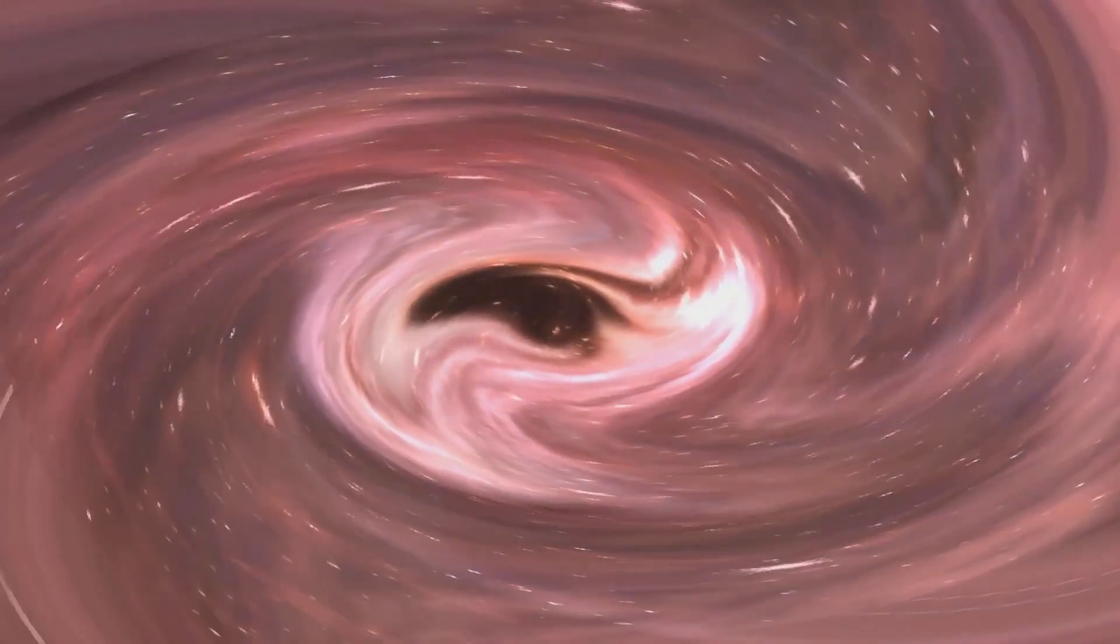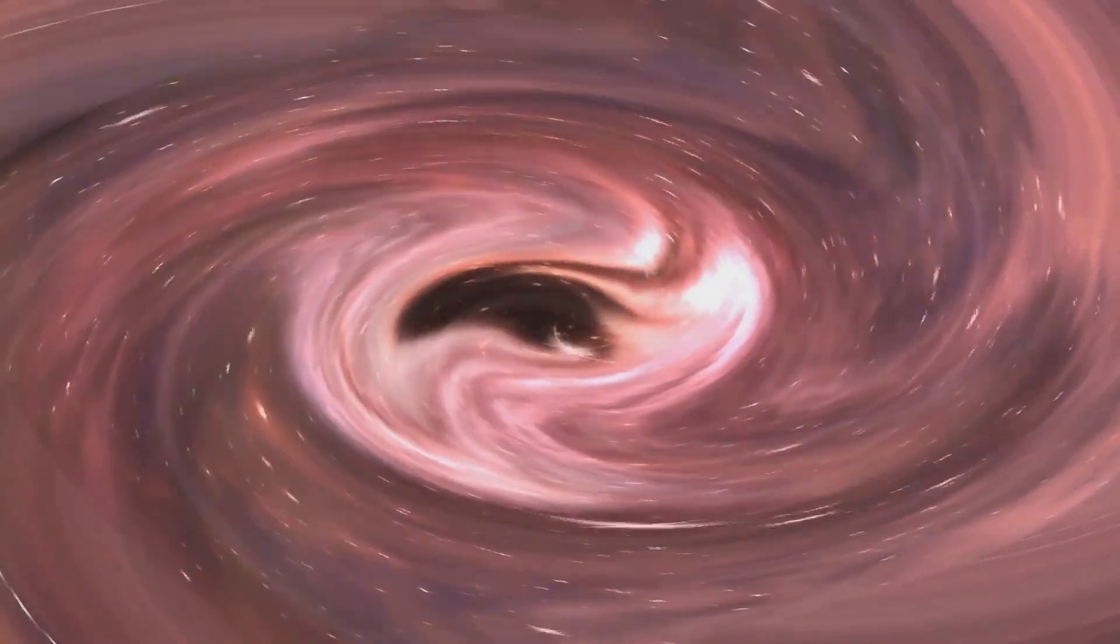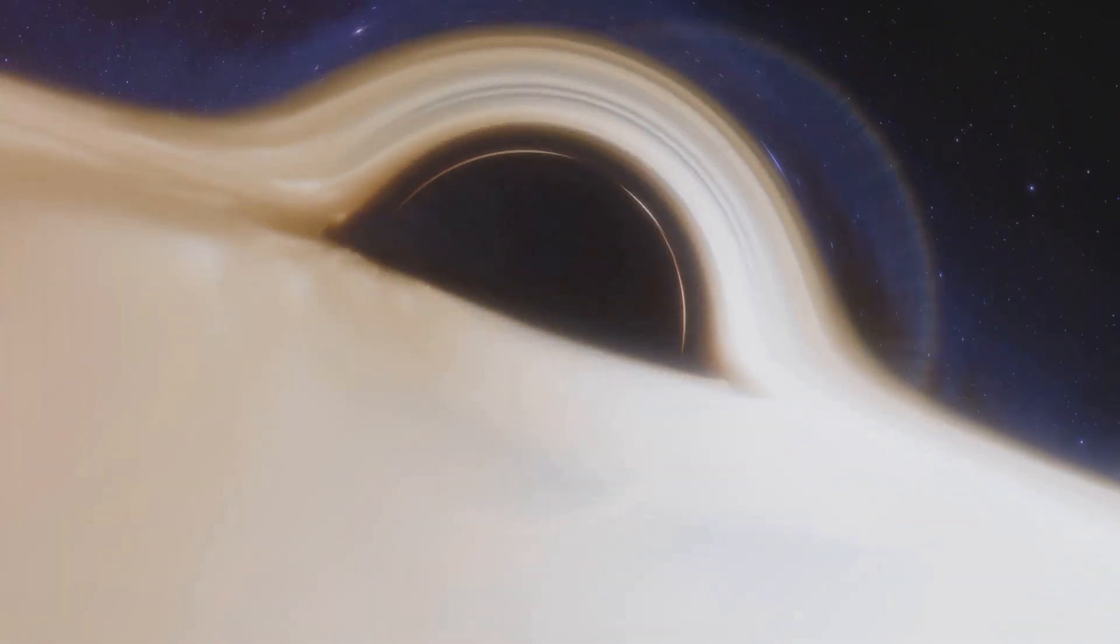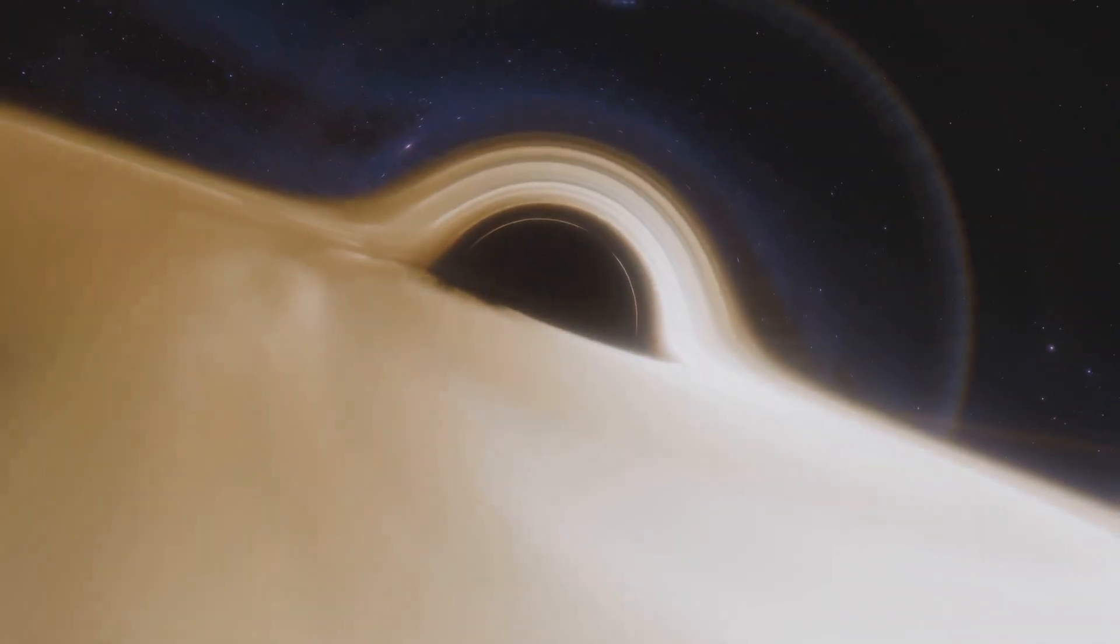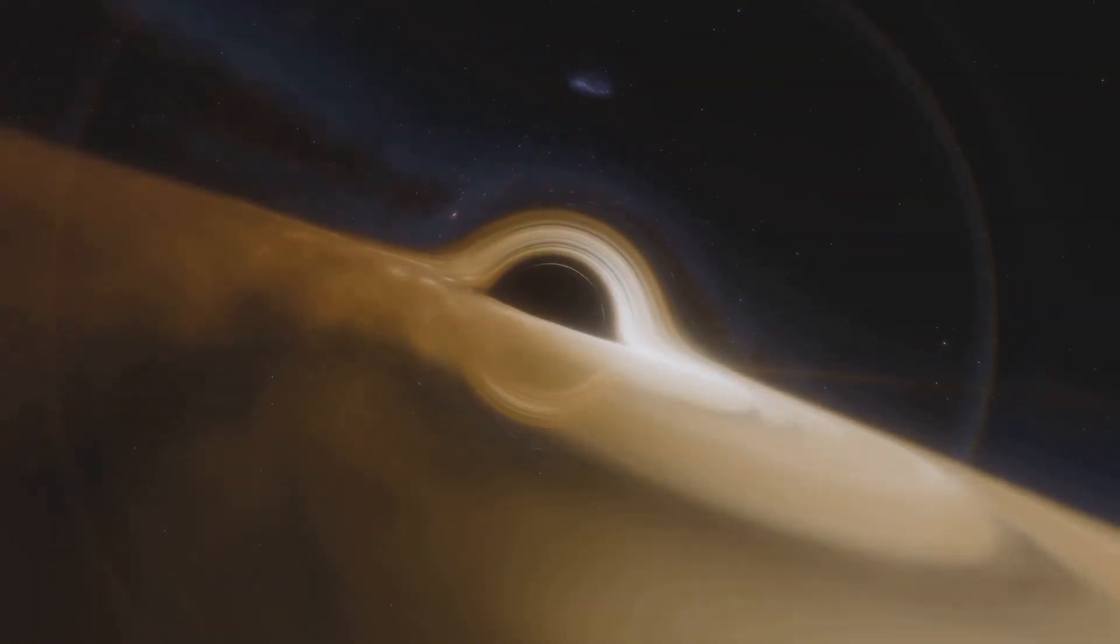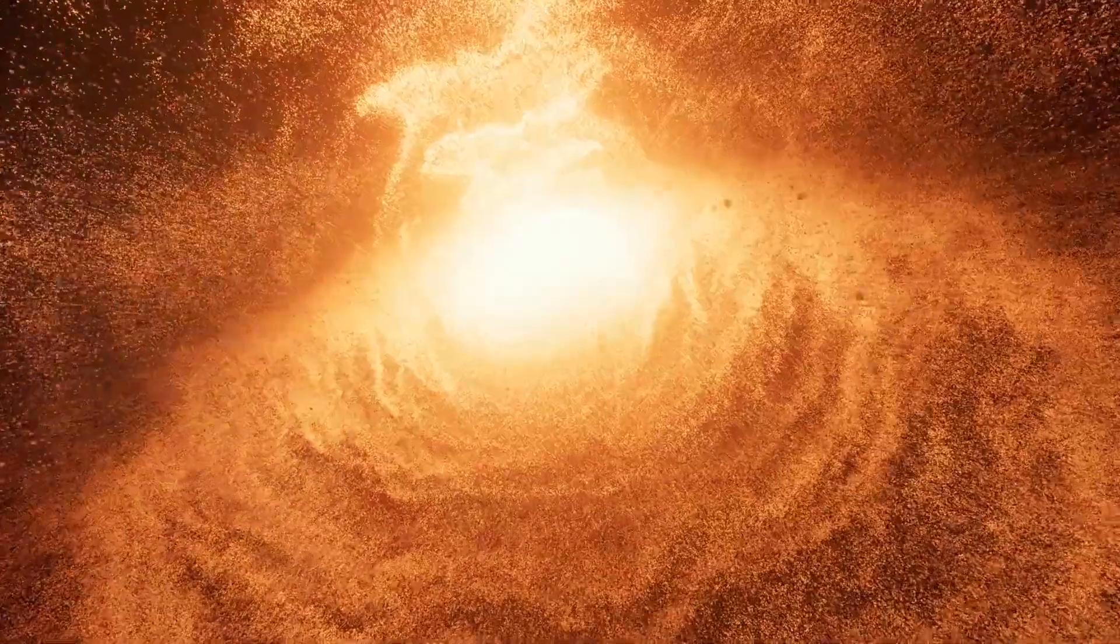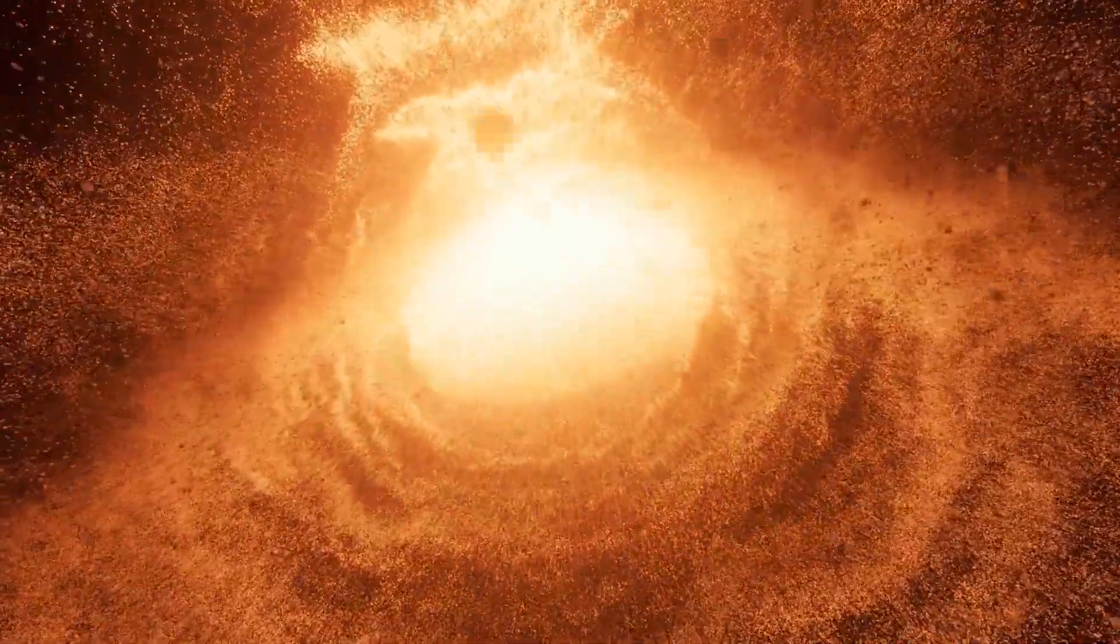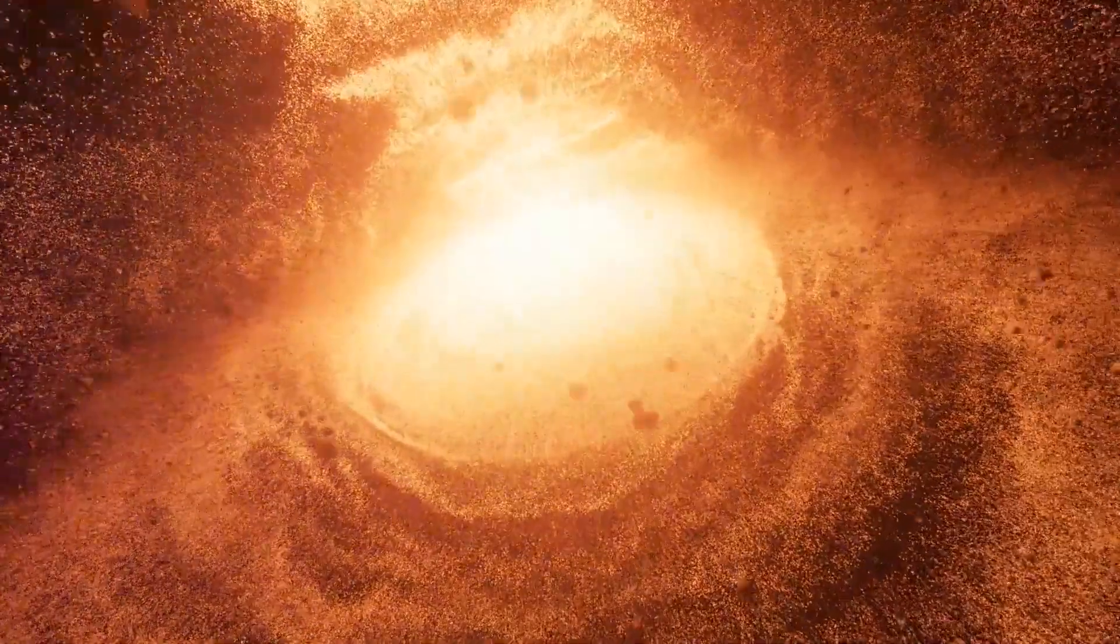Depending on the size of the black hole, some theoretical models suggest that an object could pass the event horizon without immediate destruction, although its ultimate fate is still sealed. This chapter explains spaghettification versus the common misconception of being crushed.